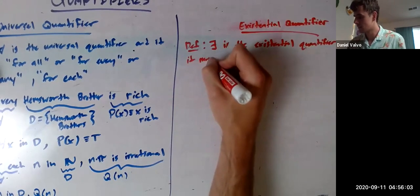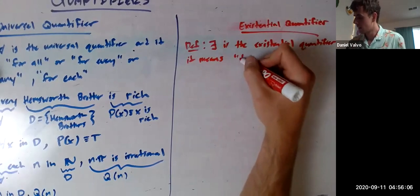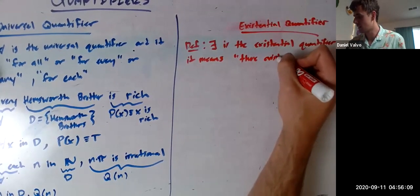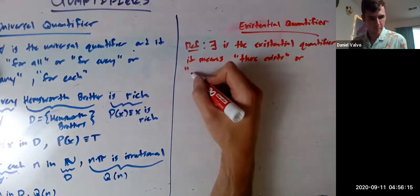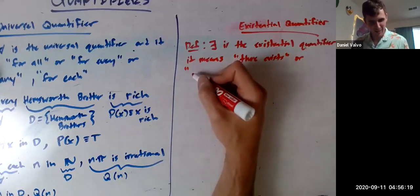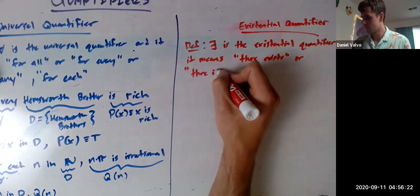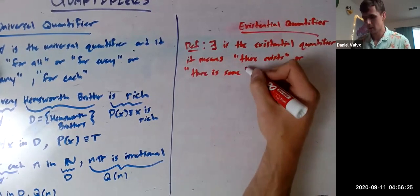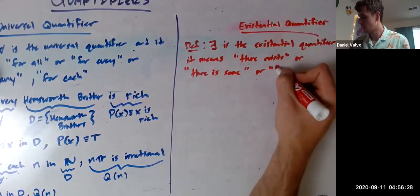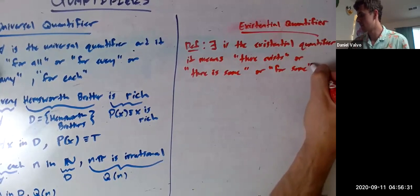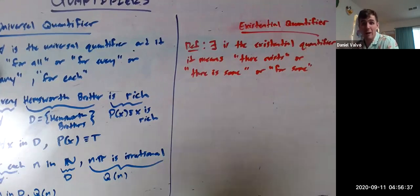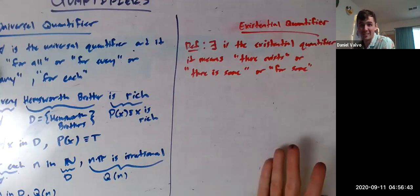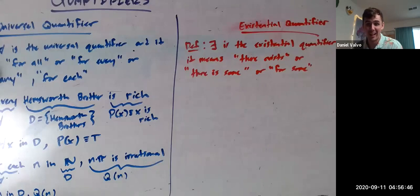And it means there exists, or there is some, or for some, something like that. So for all means whatever you're talking about works for everything in the domain. Kind of the opposite of it working for everything in the domain is it working for at least one. The opposite of everything is just kind of one.